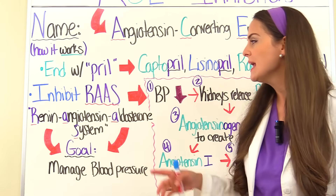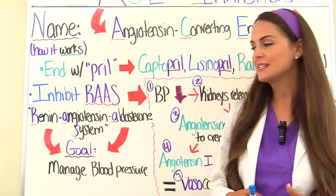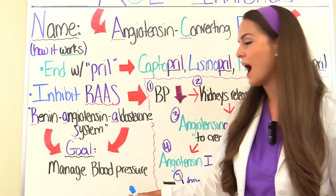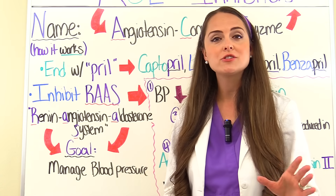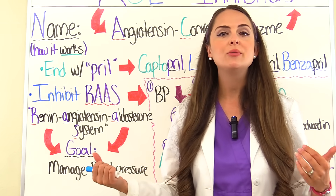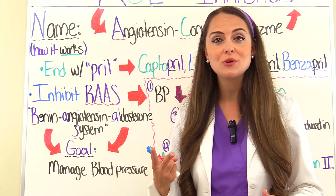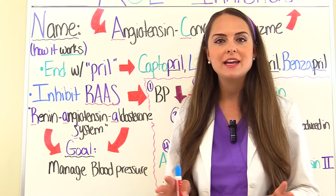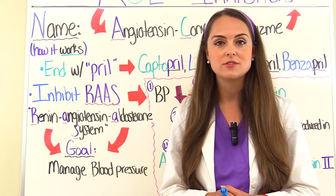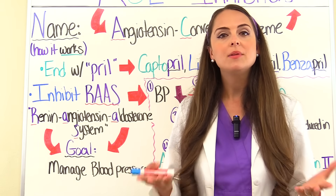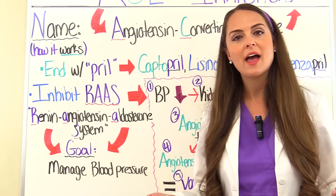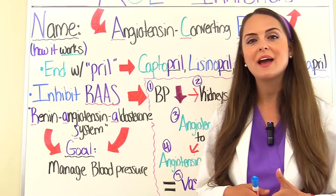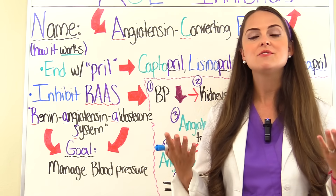ACE plays a huge role in our RAS system — the renin-angiotensin-aldosterone system. The whole goal of this system is to manage our blood pressure, especially when it's low. When blood pressure drops, this system kicks in to get angiotensin II working in the body, because angiotensin II is a major vasoconstrictor of our vessels, which increases blood pressure. It also triggers the release of aldosterone, which puts more sodium and water into circulation, increasing blood volume and raising pressure.